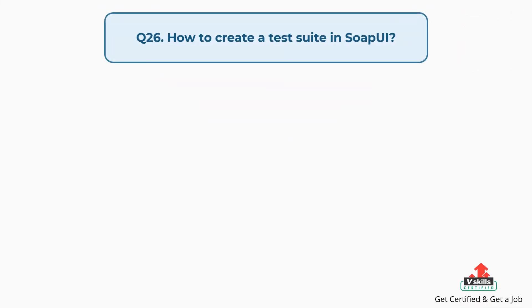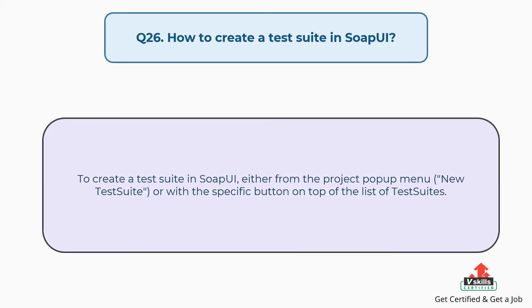Question number twenty-six: How to create a test suite in SOAP UI? To create a test suite in SOAP UI, either use the project pop-up menu and select new test suite, or use the specific button on top of the list of test suites.